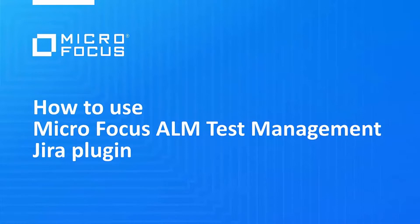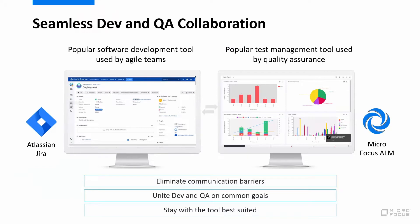First, an overview about the integration between ALM and Jira and what the plugin means to you. Both Micro Focus ALM and Atlassian Jira are well-known tools. ALM Quality Center is widely used by QA teams for test management, while Atlassian Jira is popular among development teams to manage their agile projects. Integrating the two products enables seamless collaboration between development and QA teams. It eliminates communication barriers and unites Dev and QA on common business goals, while each team can stay with the tool best suited for their work.